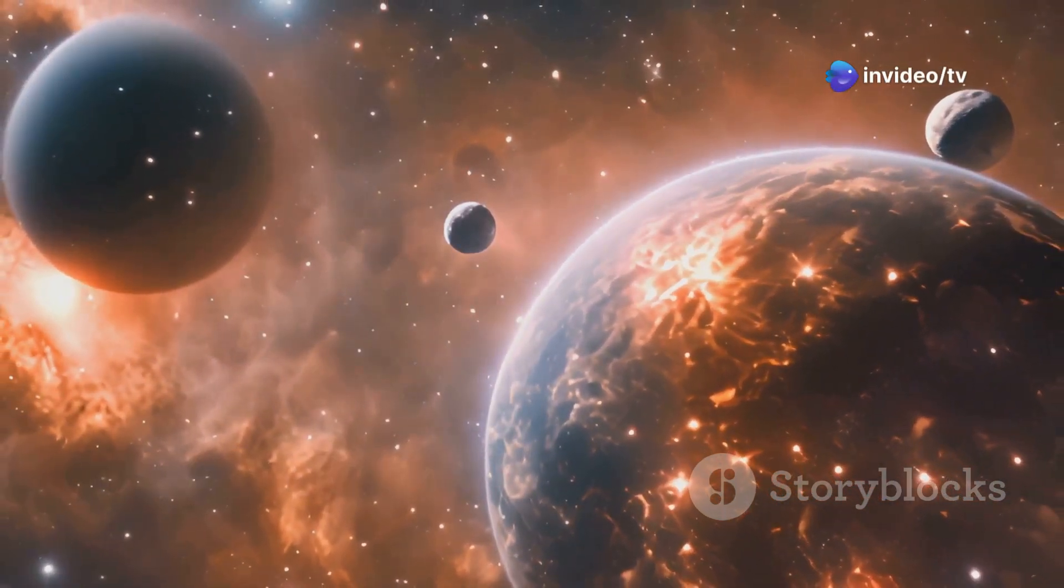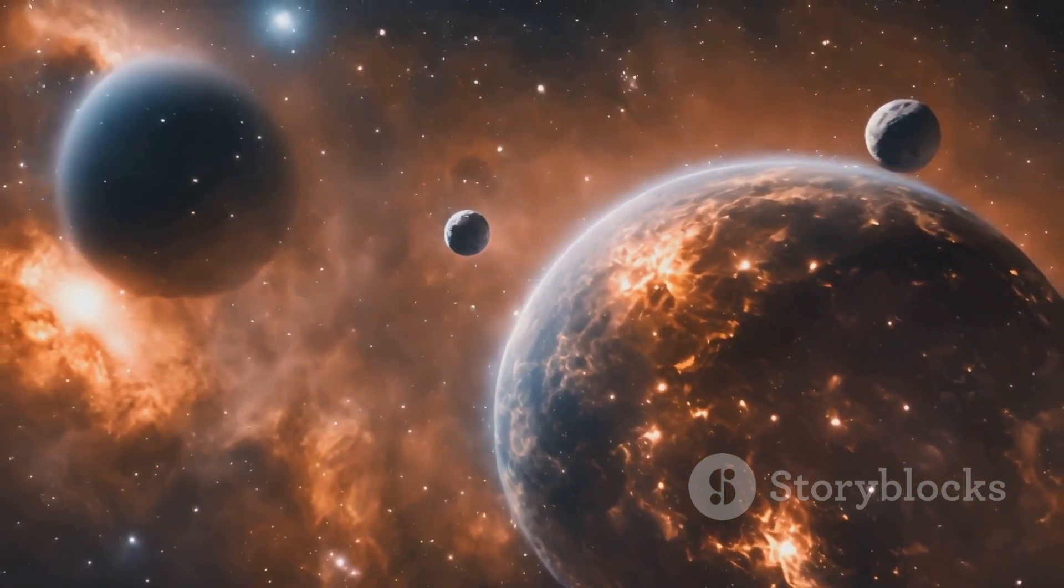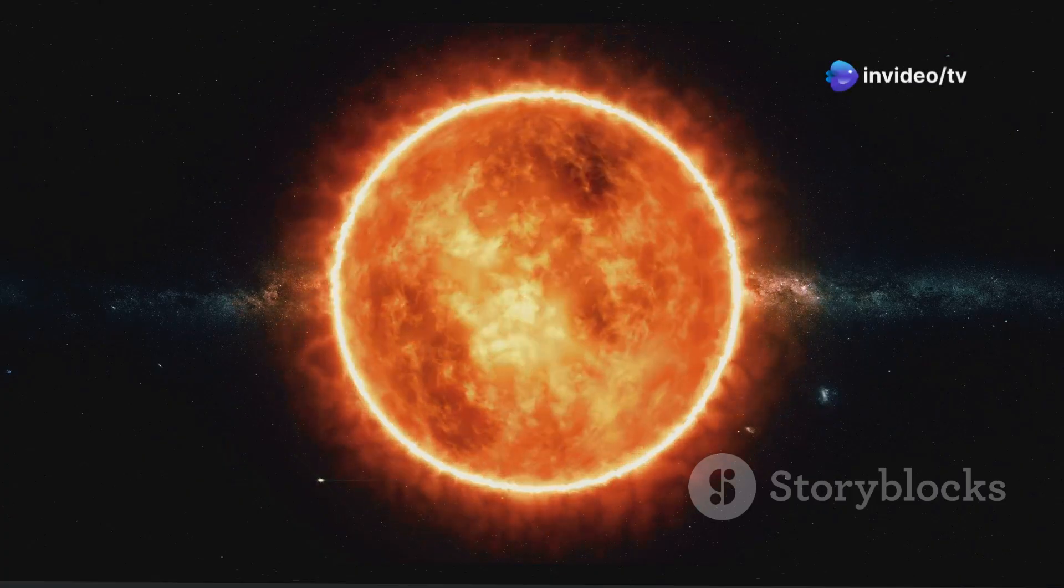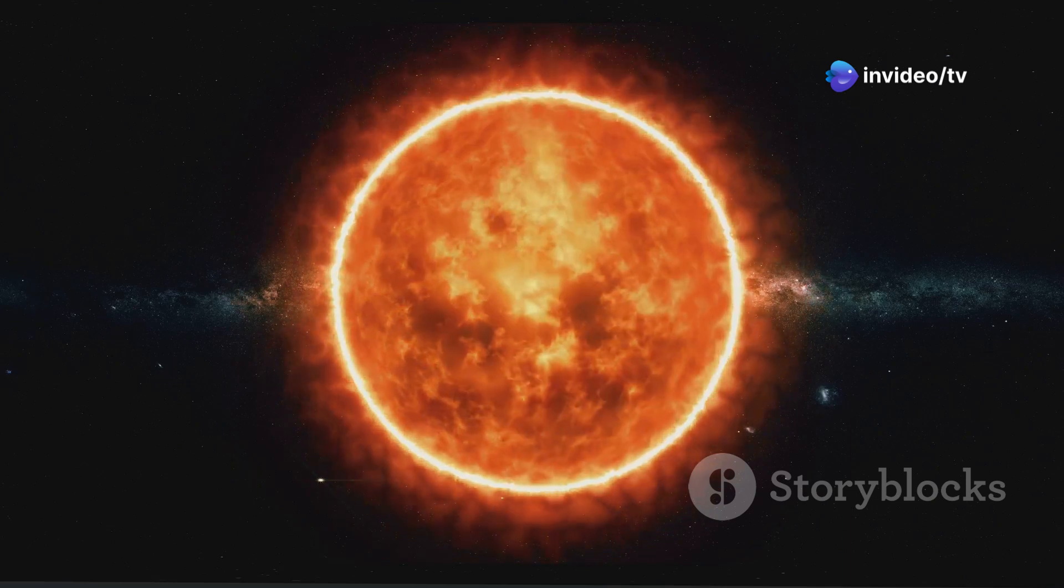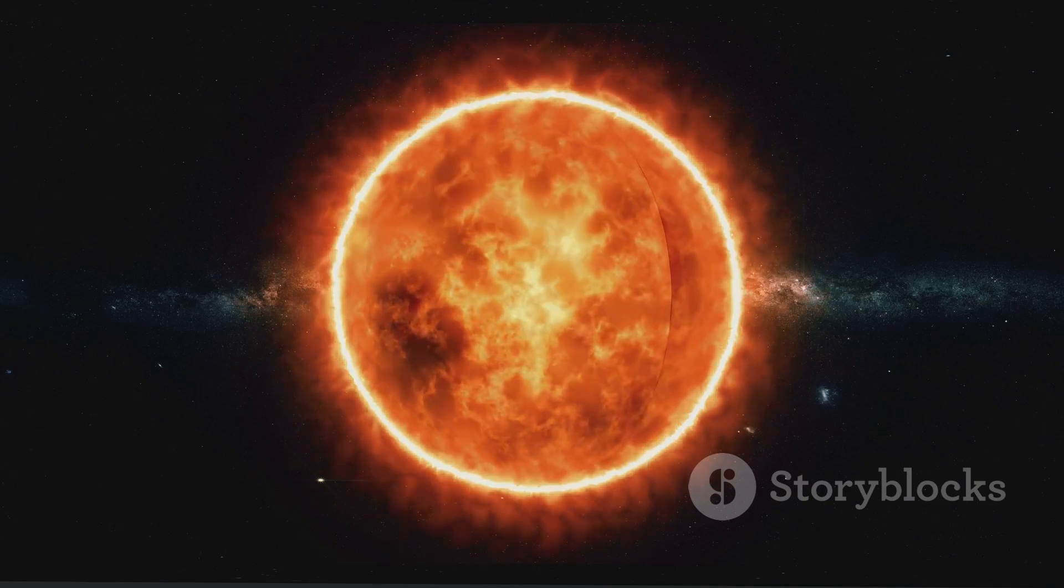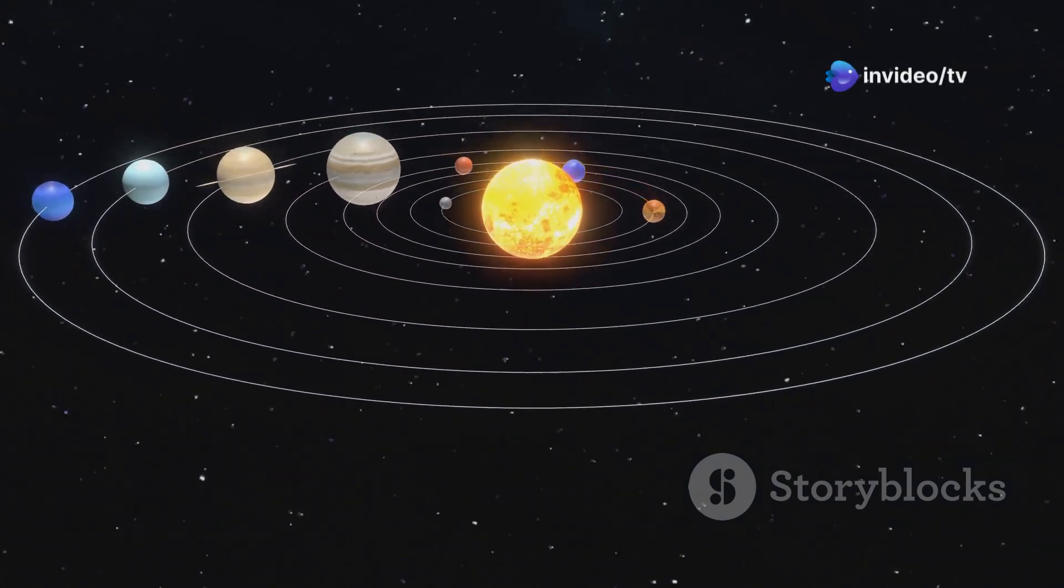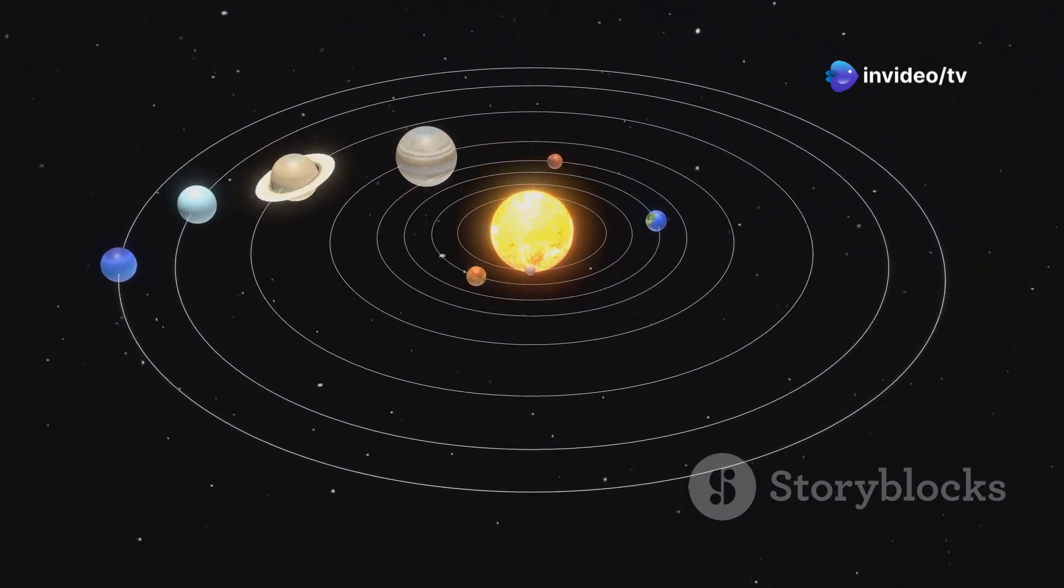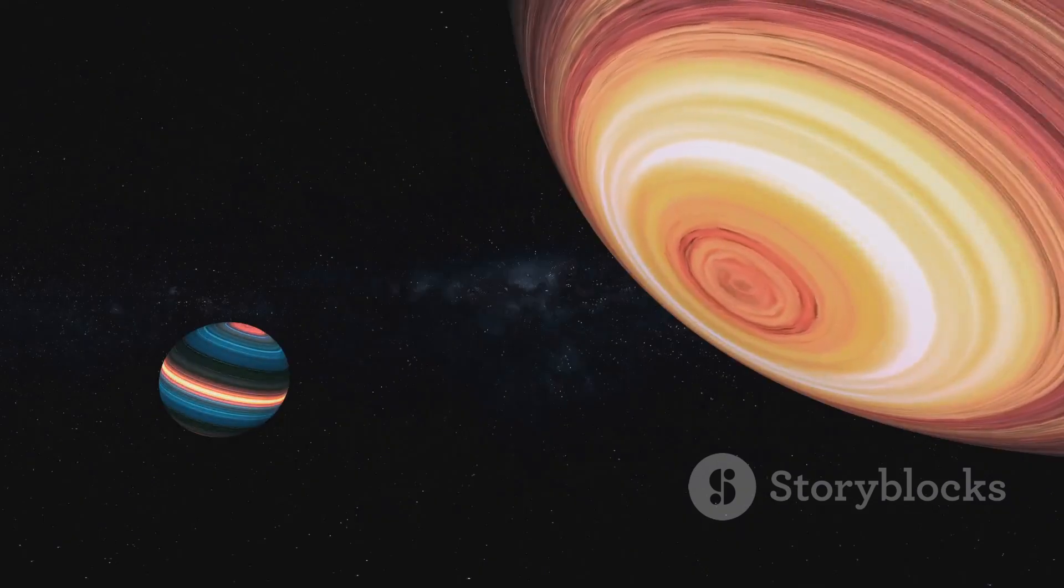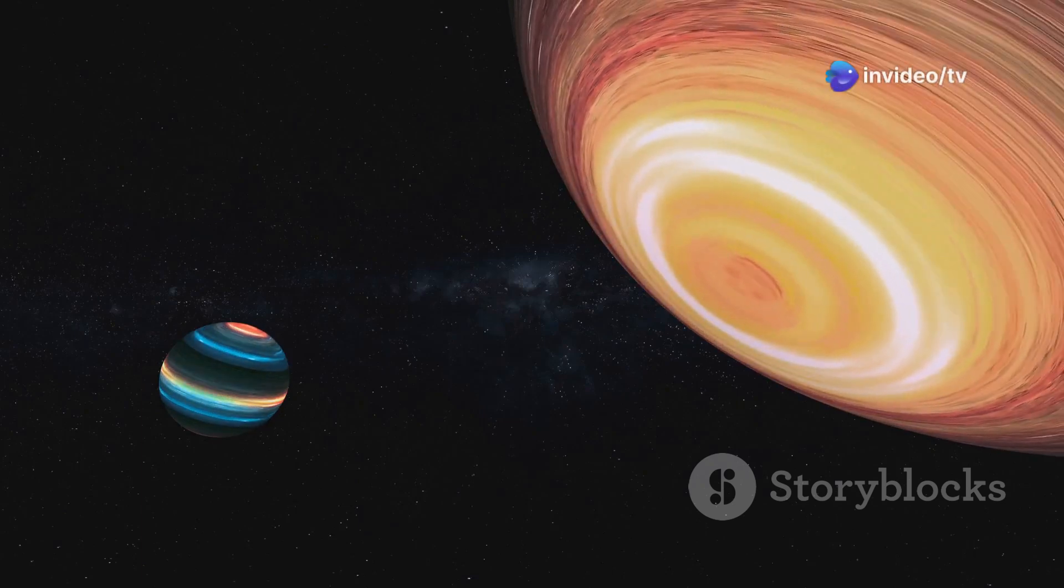Now let's zoom into our own cosmic backyard - our solar system. Our sun, a yellow dwarf star, sits at the center of this bustling system. It is the powerhouse that fuels life on Earth and governs the movements of all the planets and other celestial bodies within its reach. Eight planets, including Earth, orbit the sun, bound by its gravity. These planets come in a variety of sizes and compositions, from the small rocky worlds close to the sun to the massive gas giants further out.